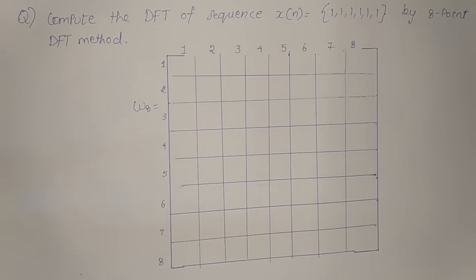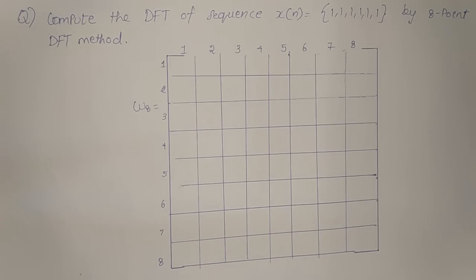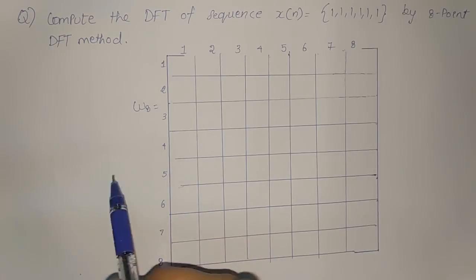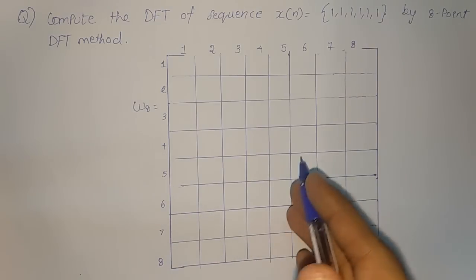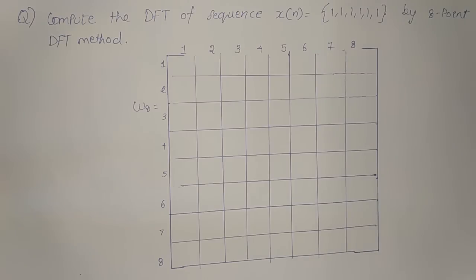I will be teaching you a method where you first have to find something known as W8, which is the 8-point DFT matrix. This consists of several steps — the construction of the W8 matrix. W8 is an 8 by 8 matrix and should have 64 elements.